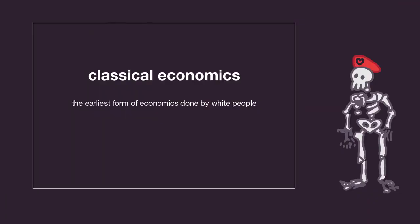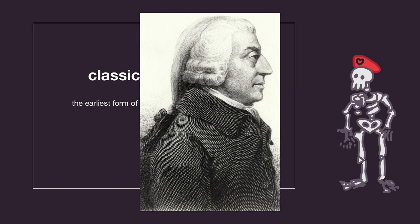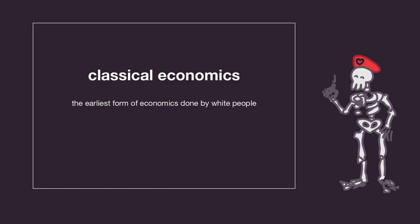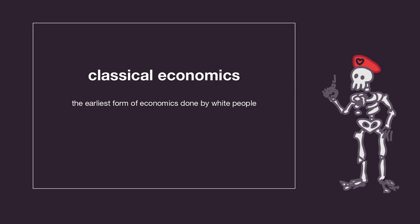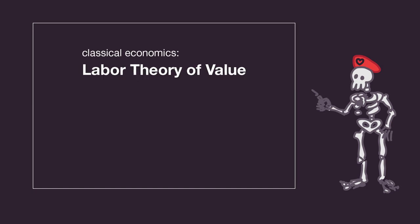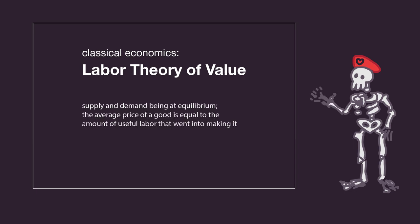So anyway, classical economics is the work of people like Adam Smith and David Ricardo. It's a lot of things — these people wrote quite large and boring books — but for our purposes, the most important thing it did was make use of the labor theory of value. The various forms of the labor theory of value state that you can predict the average price of a good based on the amount of useful labor that went into making it. Turns out, though, that this is not a real good way of predicting prices.